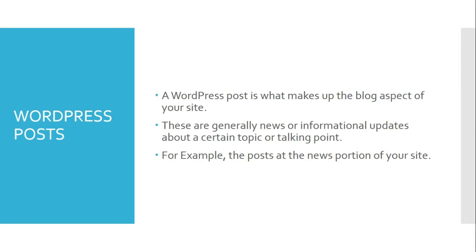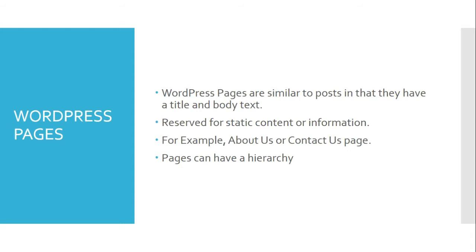Let us see some insights about WordPress pages. WordPress pages are similar to posts in that they have a title and body text. Pages are generally reserved for static content or information. Examples of this would be an about us or contact us page in a typical site. Pages are not listed by date and cannot be categorized or tagged like WordPress posts. Pages can have a hierarchy, which means you can nest pages under other pages by making one the parent of the other, thus creating a group of pages.